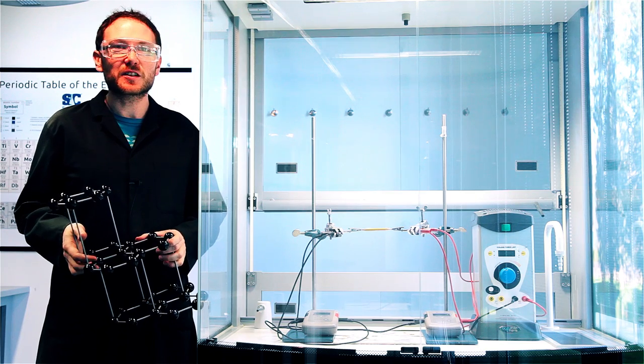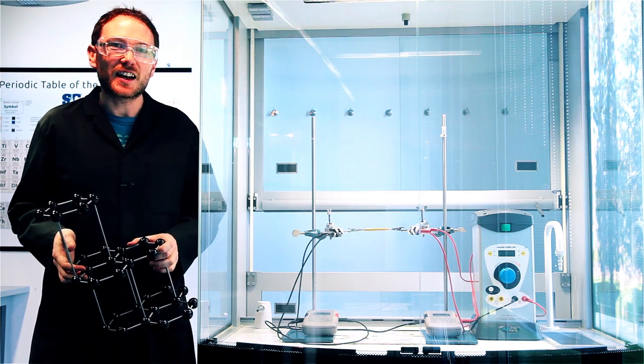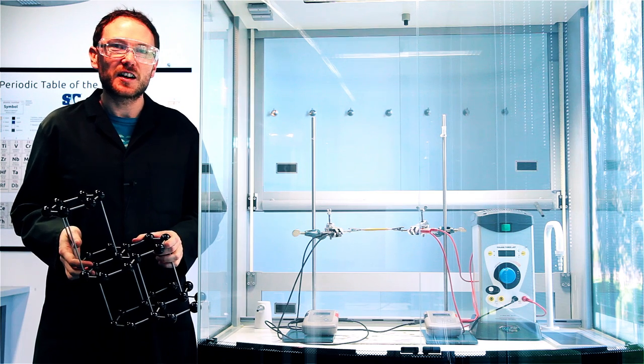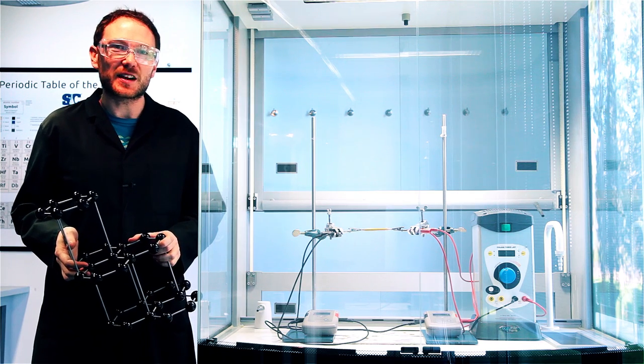In this month's exhibition chemistry, we're going to be looking at the conductivity and high melting point of graphite by passing an electric current through a pencil.